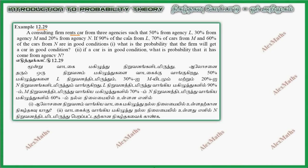A consulting firm rents cars from three agencies such that 50% from agency L, 30% from M, 20% from N. This is P of L equals 50 by 100, P of M equals 30 by 100, P of N equals 20 by 100.